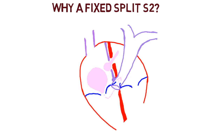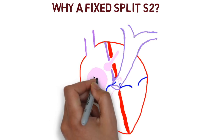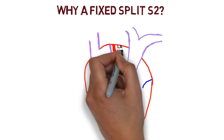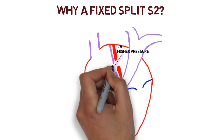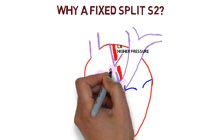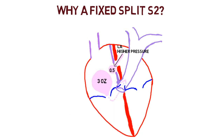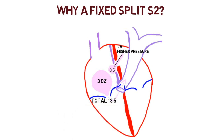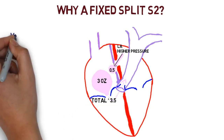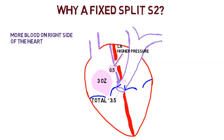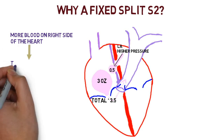Now that we've reviewed some basic embryology, let's come back to the question: why a fixed split S2? Let's use some numbers. Say we have 3 ounces of blood in the right atrium. Since left atrial pressure is normally higher than right, blood flows left to right across the defect — let's assume 0.5 ounces crosses the ASD. The total blood entering the right ventricle is 3.5 ounces.